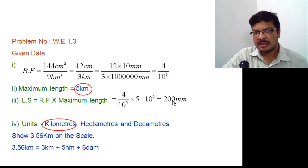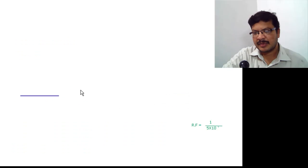That line has to be divided into some number of equal parts. Further observe this maximum length and the bigger unit among these 3 units. The bigger unit is km. Maximum length is 5 km. If you divide the 200 mm long line into 5 equal parts and each part is km. The maximum length of 5 km can be shown on this scale. So draw a line of 200 mm length as shown here. Call this as some AB.